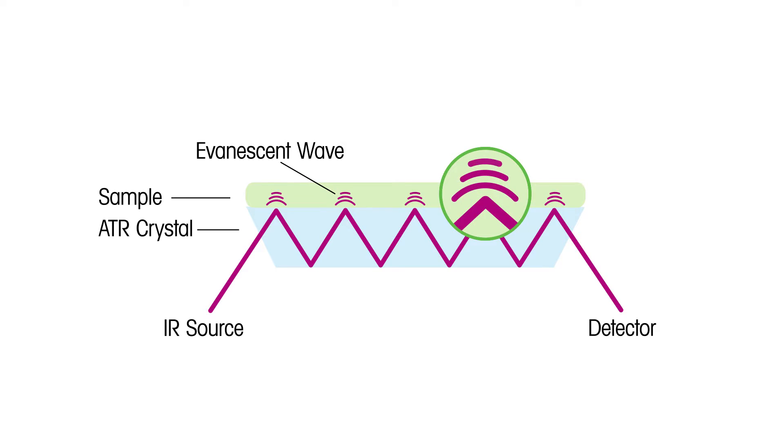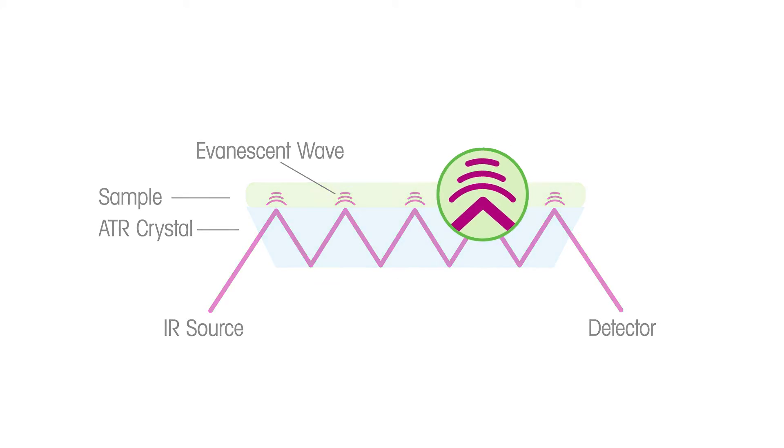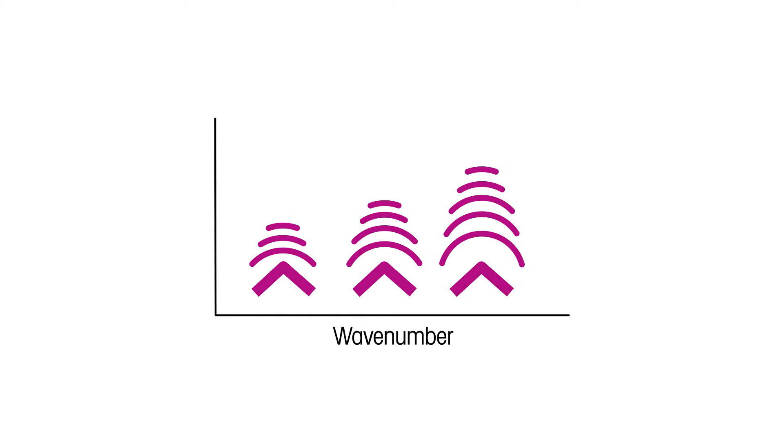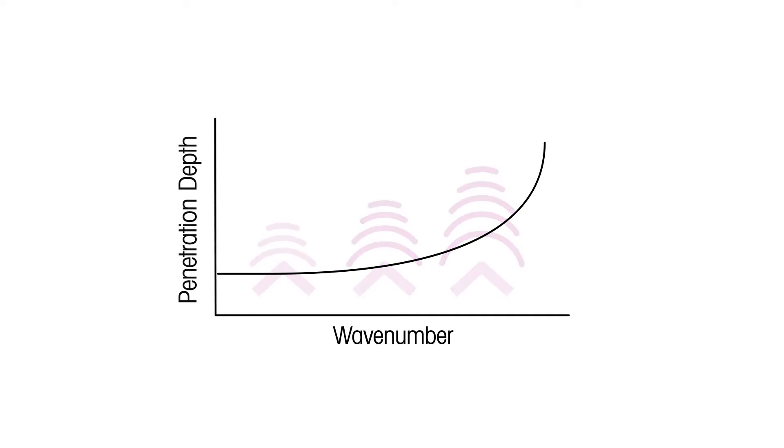First is the wavenumber being used. Because penetration depth varies with wavenumber, it is not constant across the whole spectrum being collected. The depth of penetration increases the lower your wavenumber is. This will mean that peaks down by 400 wavenumbers will have a higher peak intensity than the peaks at 4000 wavenumbers, when compared to a transmission experiment.